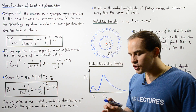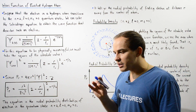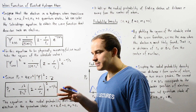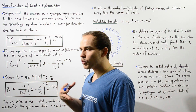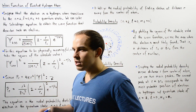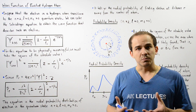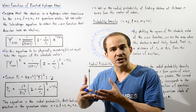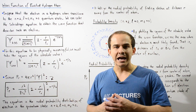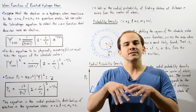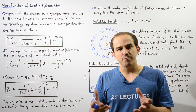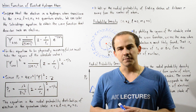When the electron is found in the ground state, the shape of the electron cloud produced by that ground electron is that of a symmetric sphere.